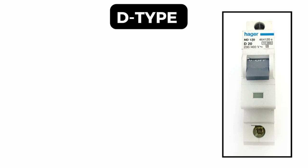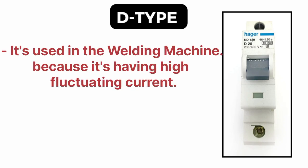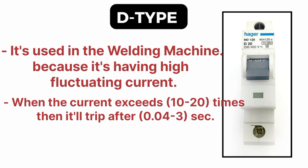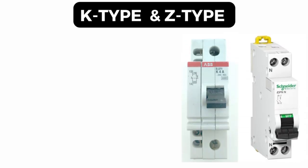Type D MCB is basically used for welding machines, because welding machines have very high fluctuating current. Type D MCBs are used for high fluctuating current devices. The current tripping capacity is 10 to 20 times the rating, and the required time for tripping is 0.04 to 3 seconds.